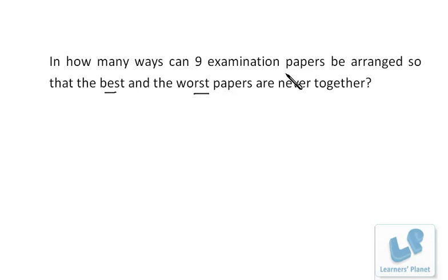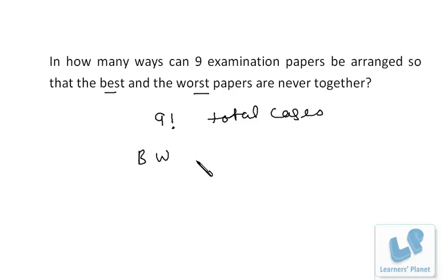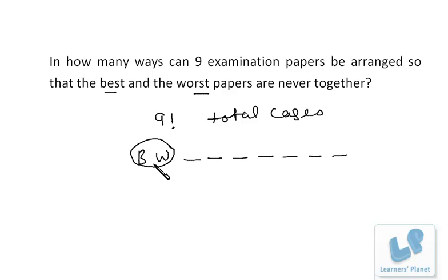First, I take the entire arrangement. Nine examination papers can be arranged in 9 factorial ways — these are the total cases. Now, since I have to find cases where best and worst paper are never together, I first find when they ARE together. That means best and worst are grouped, plus the seven others — I treat the best-and-worst pair as one unit.